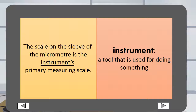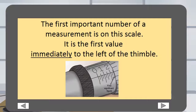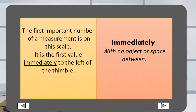Instrument is a tool that is used for doing something. The first important number of a measurement is on this scale. It is the first value immediately to the left of the thimble. Immediately means with no object or space in between.